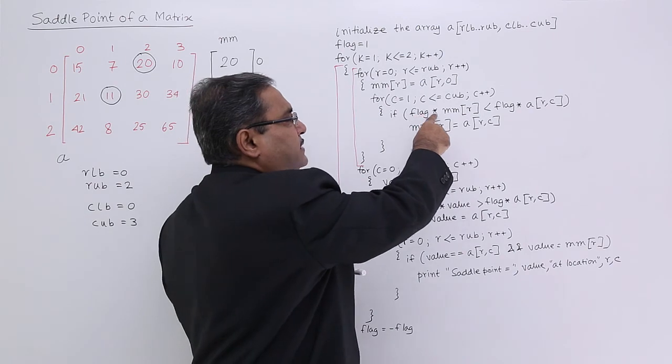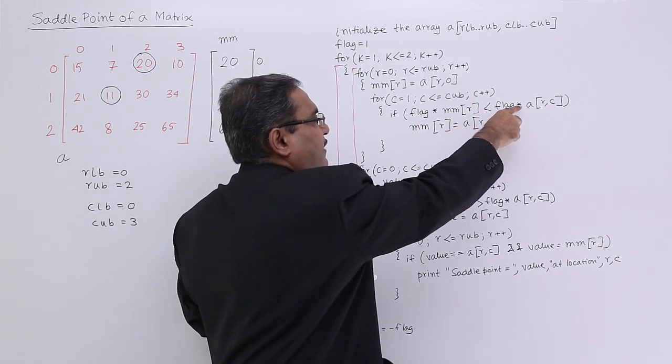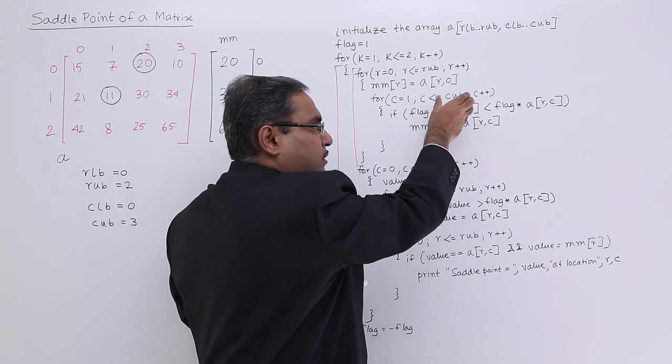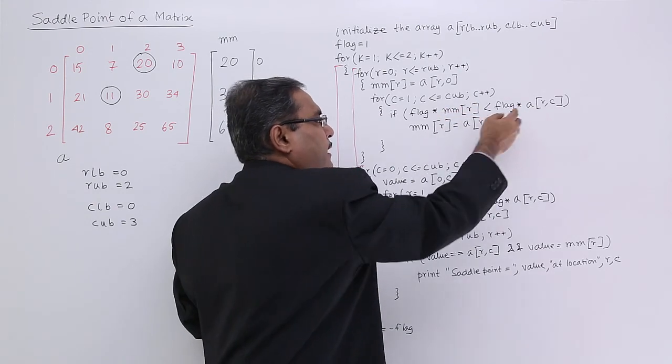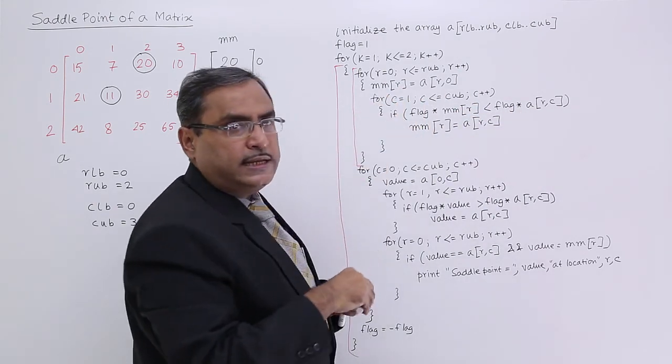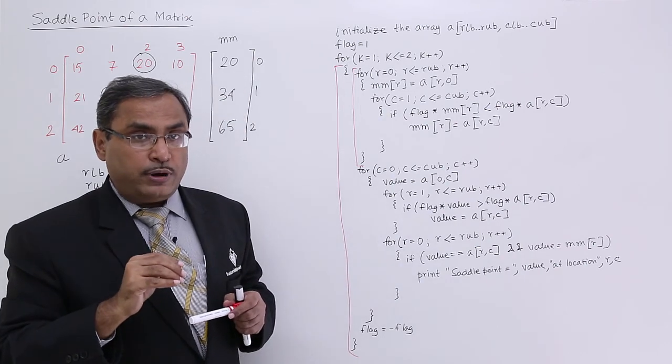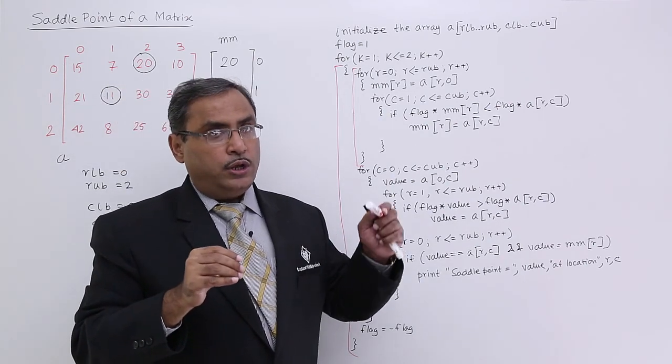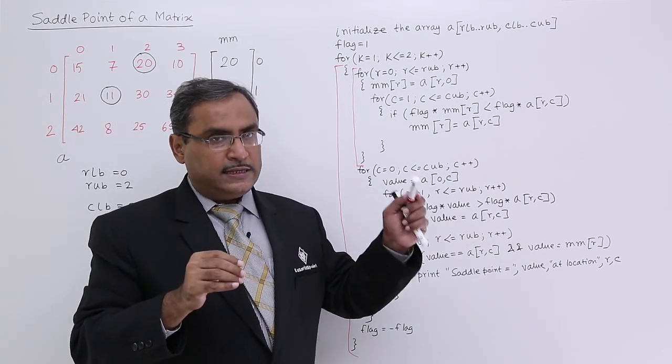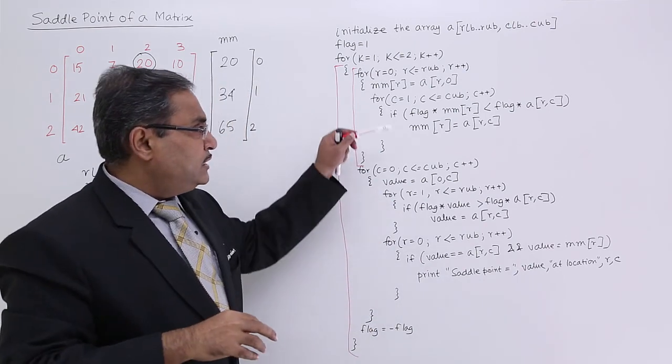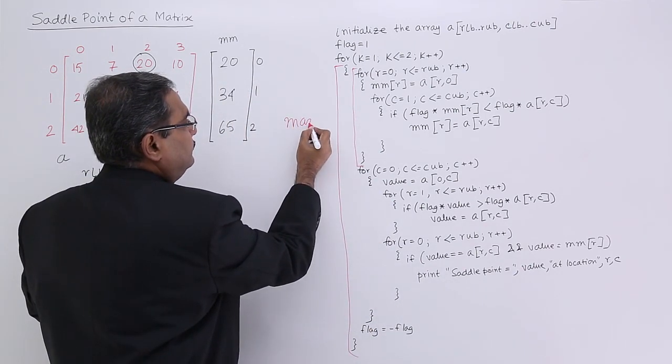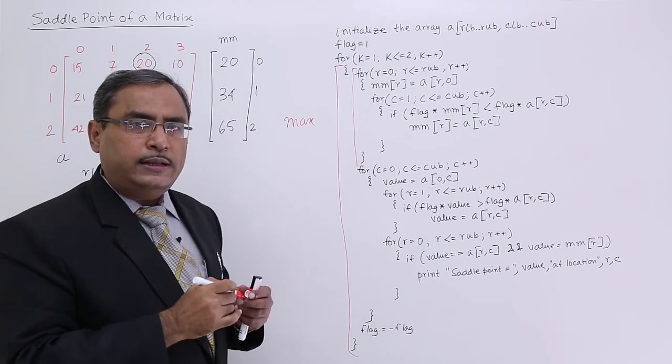Now if flag star mm r is less than a r c, that means if mm r is containing lesser value compared to this, then mm r will be updated with this a r c. That means I am going to write the maximum of each row with the respective mm arrays location. This is my max and obviously here I should be calculating the min.